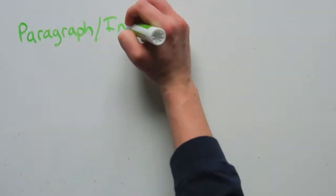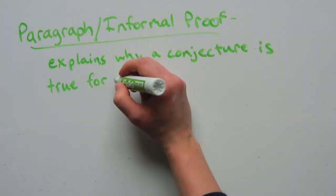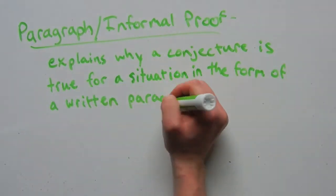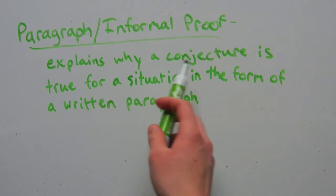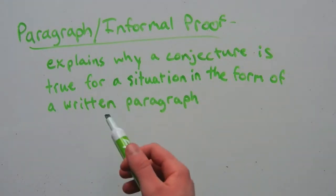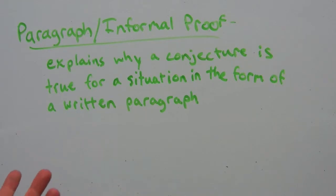Now we're going to talk about one form of proof. A paragraph or informal proof explains why a conjecture is true for a certain situation or given situation, in the form of a written paragraph.